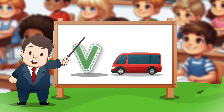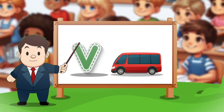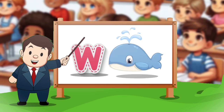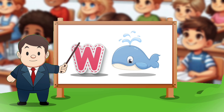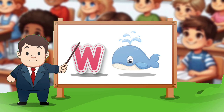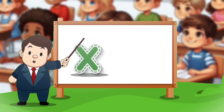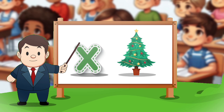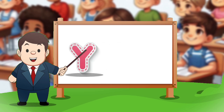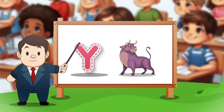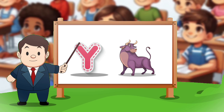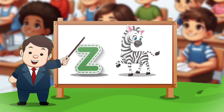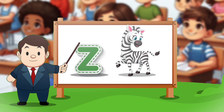V. V for bird. W. W for whale. X. X for Xmas. Y. Y for york. Z. Z for zebra.